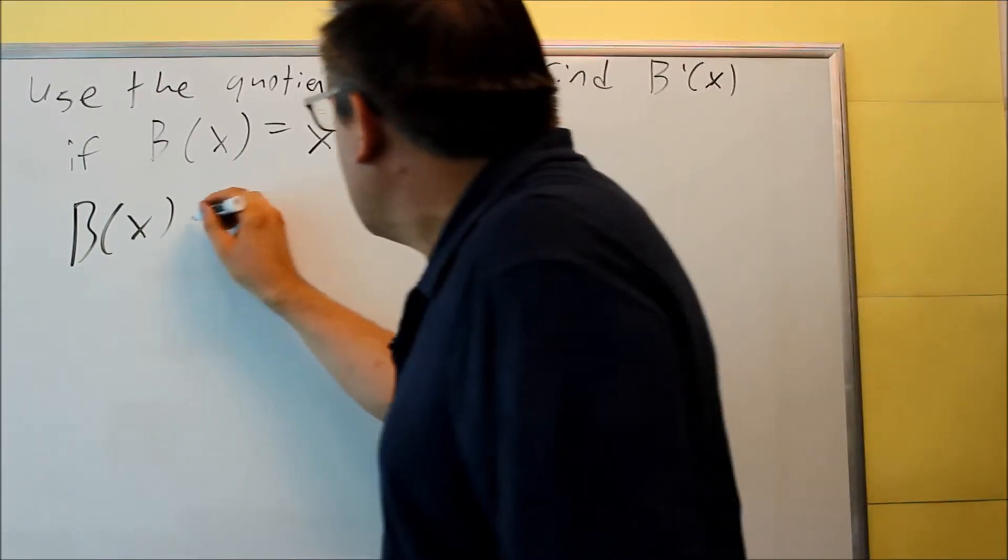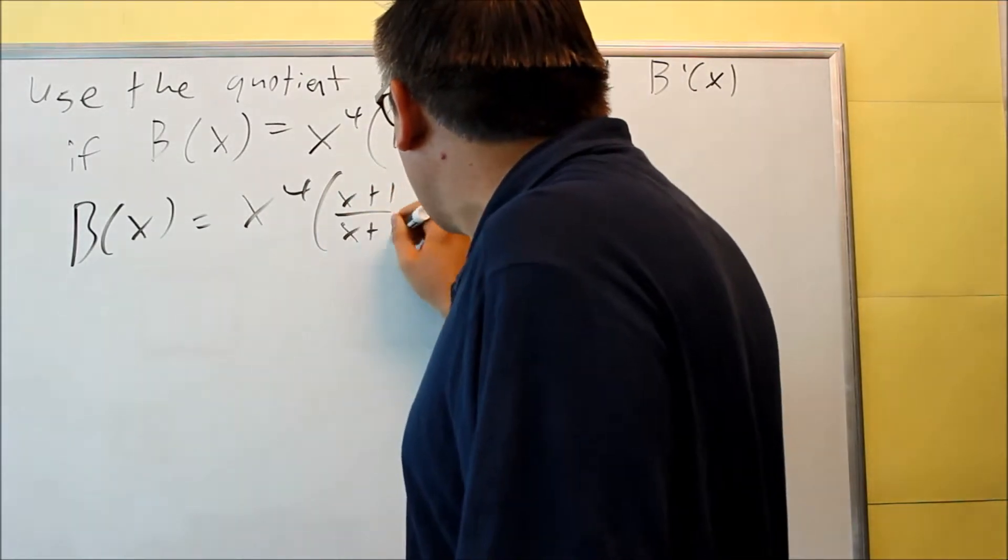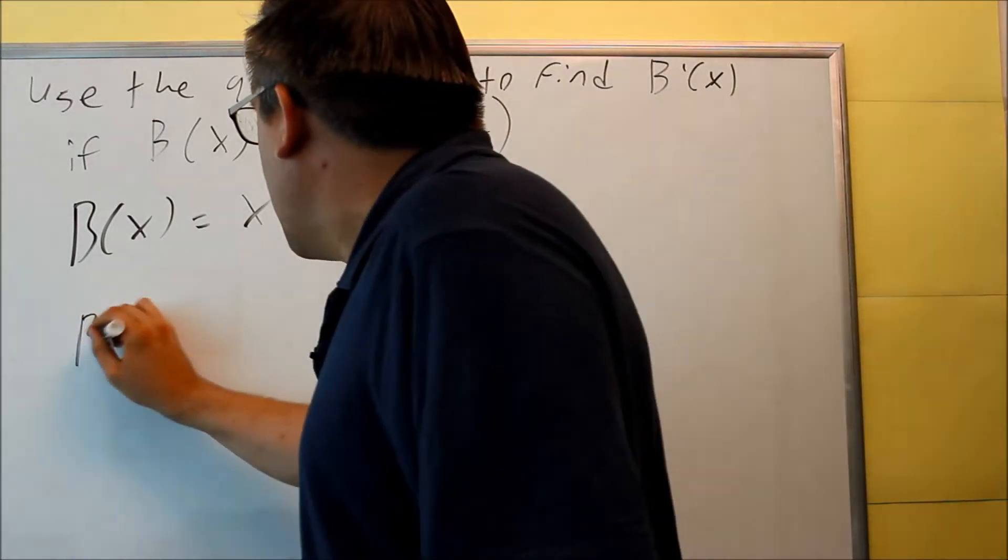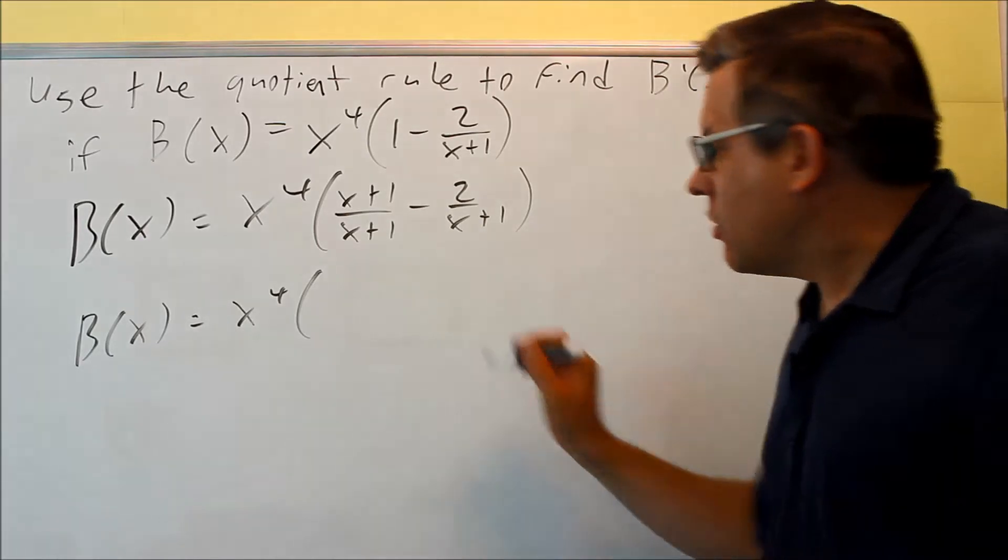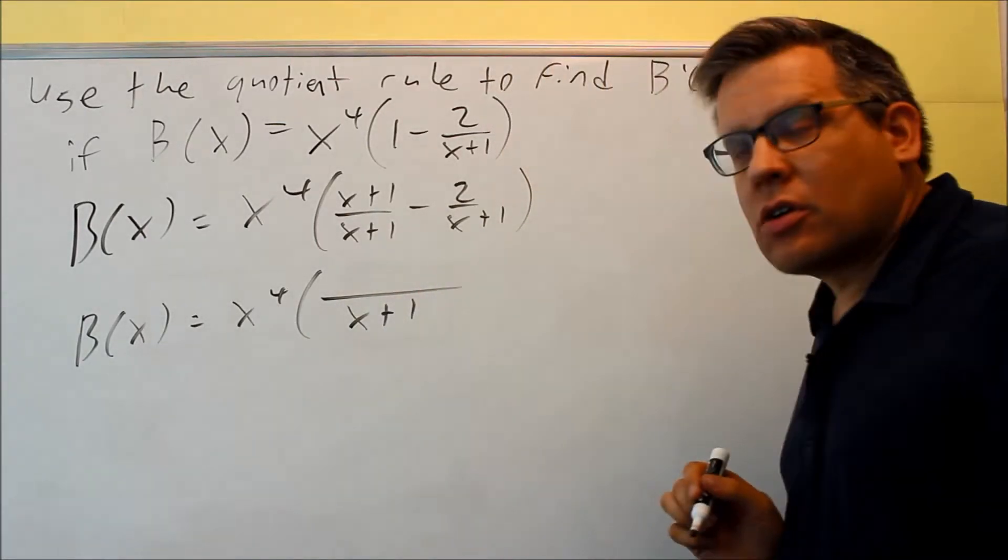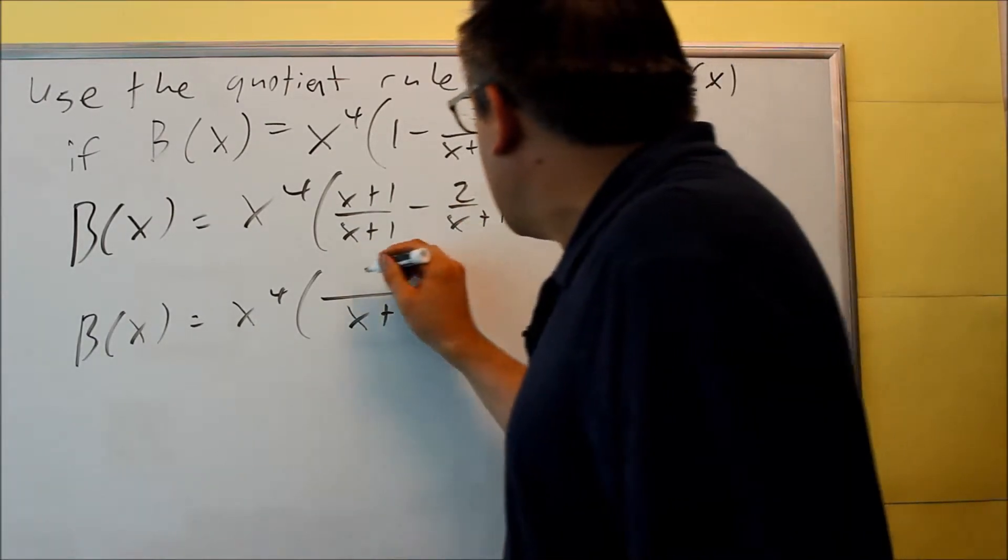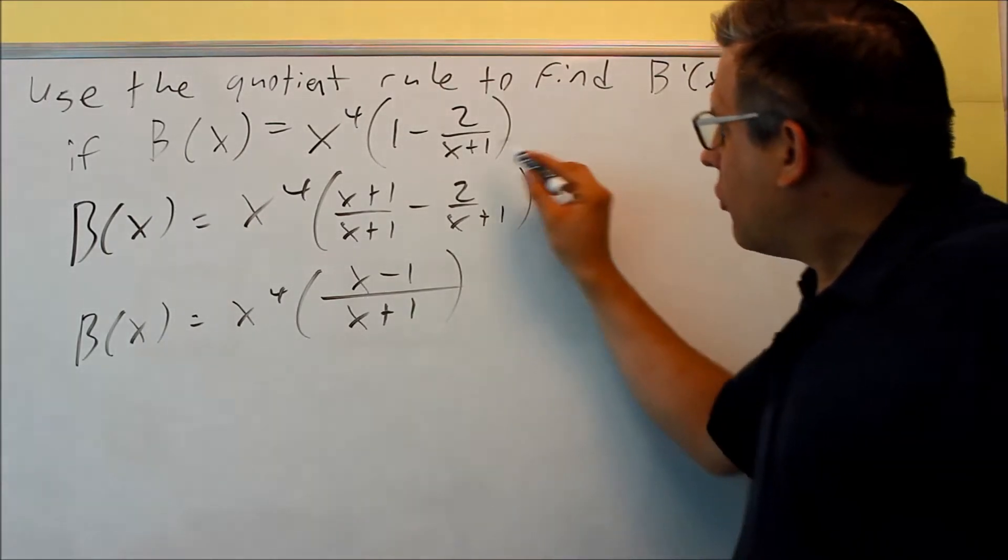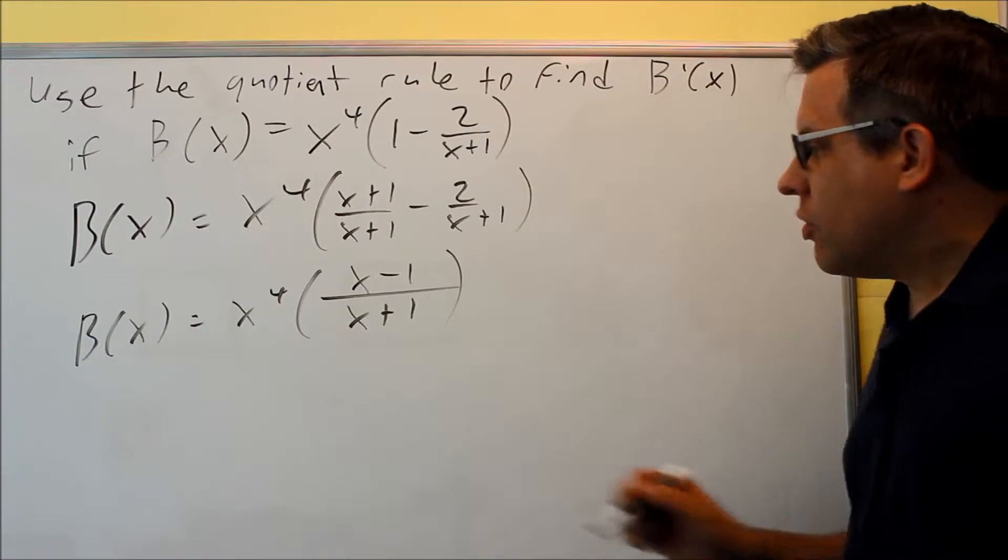Okay, so for this, I can do x to the fourth, I can do x plus 1 over x plus 1, get them both to be common denominators, and then I'm going to work that out inside. At the bottom, I'll just get x plus 1, my common denominator. On top, I can combine this together. x plus 1 minus 2 means that I get x minus 1 left. So, this whole thing here, I was able to combine together into this fraction.